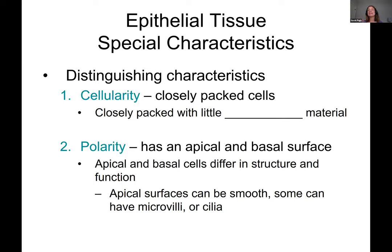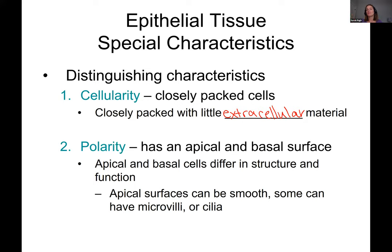Before going into different kinds of epithelial tissue, here are characteristics that all epithelial tissue shares. First, it is cellular — it has a ton of cells packed closely together with very little extracellular material. When you look at epithelium under a microscope it looks like cell next to cell next to cell. The cells are very closely packed with very little material outside them.